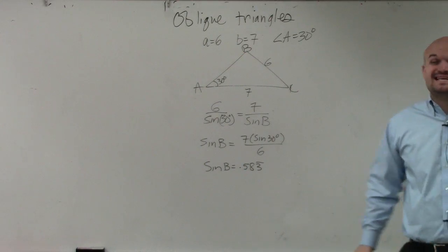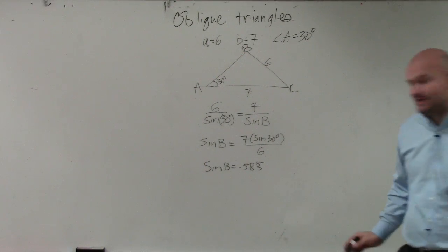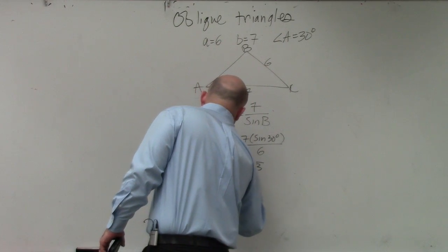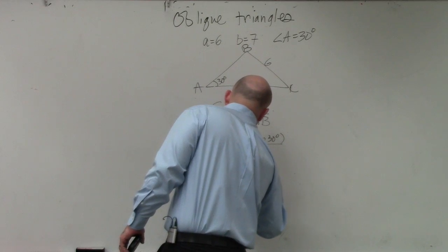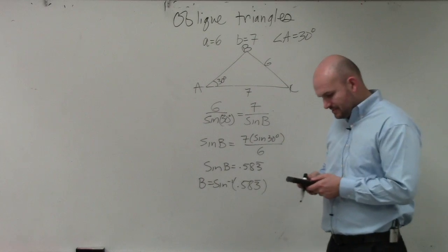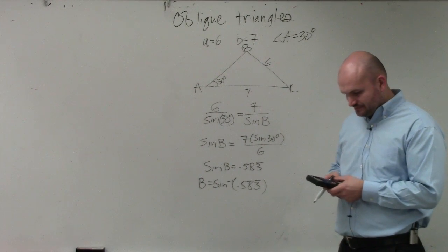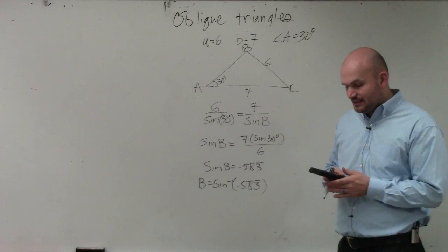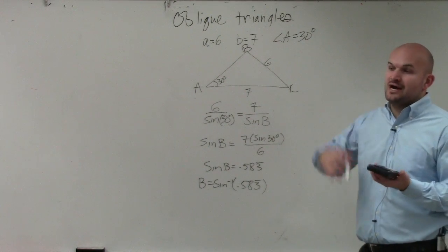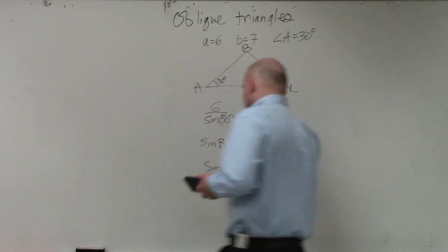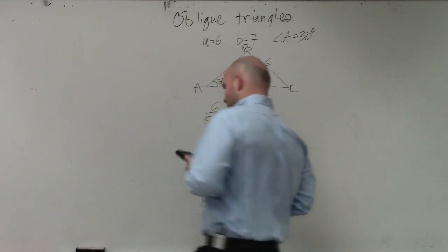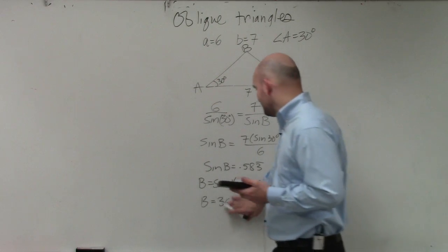And I get 0.58333 repeating. Now, to actually find the angle B, I need to use sine inverse. So I do sine inverse. So I basically would just do second answer. Oops. I'm sorry. Sine inverse of second answer. I'm not going to want to round anything yet. But I get 35.685. I will now round this to the 10th. So it would be 35.7.